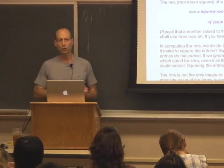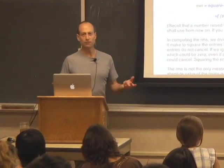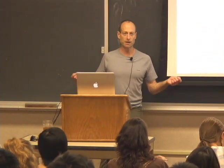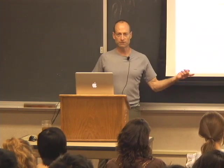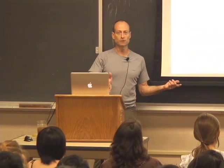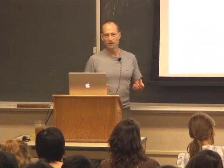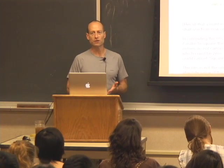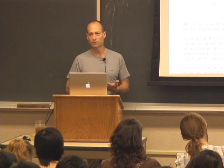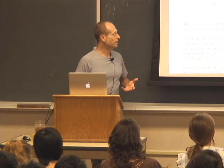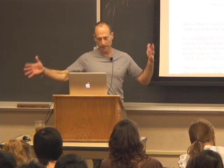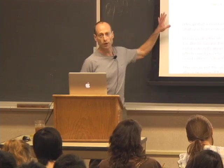The RMS is a measure of how large an element of the list typically is. You could have a list with a mean of zero where large positive and negative numbers cancel — the RMS removes the sign from elements to give an overall summary of their magnitude. You could also use the average of absolute values, but RMS is the standard approach.